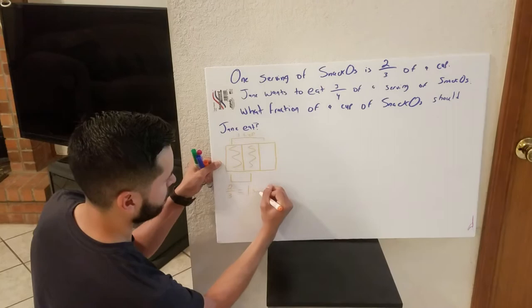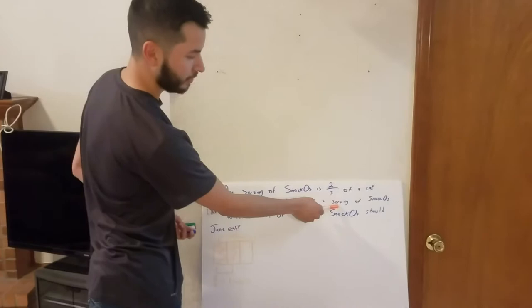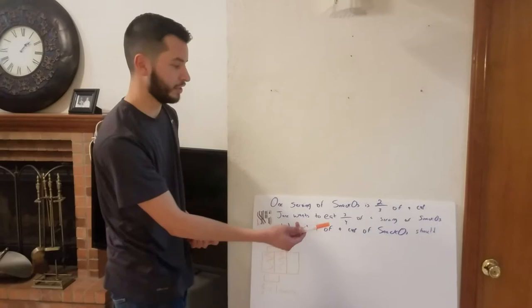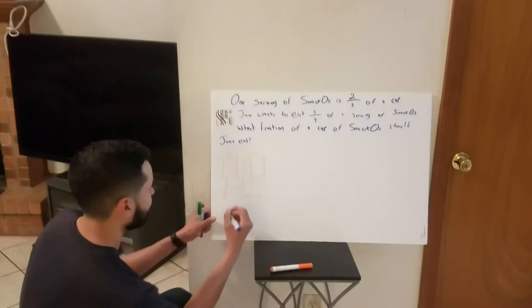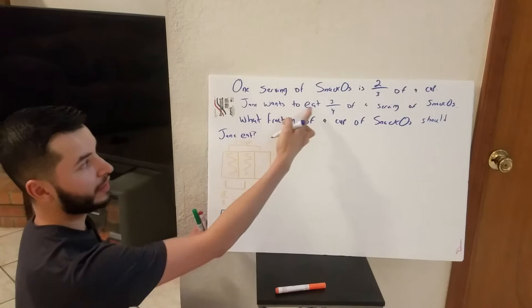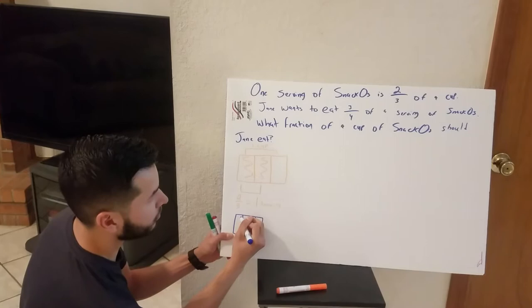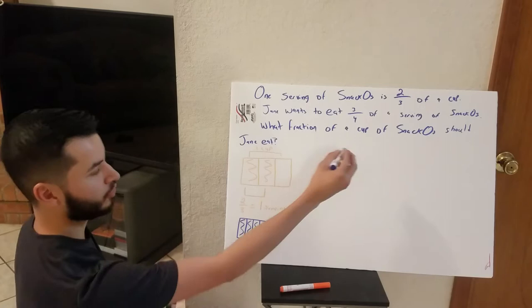Let's go ahead and read the second sentence, see what it's asking. Jane wants to eat three-fourths of a serving of snackos. The wording 'of a serving' indicates that our whole changes to the two — that's our new whole. Let's go ahead and draw that. This is the same as this because it's a serving, and Jane wants to eat three-fourths of this. So we could turn this into fourths by cutting the halves into two, meaning they're in fourths now, and she wants to eat three-fourths of this. So this is three-fourths of a serving.